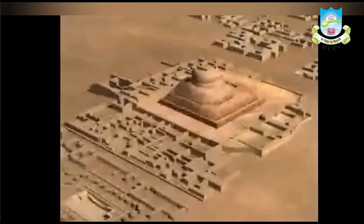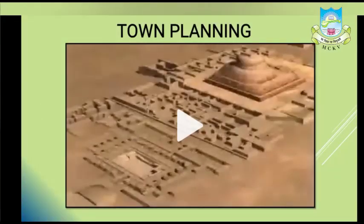The citadel was generally situated in the western part of the city and was fortified by a wall. It was also built on a mound, which may have been deliberately constructed to protect the citadel area from flooding. Another interesting feature is that all the important public buildings were erected in this citadel area.